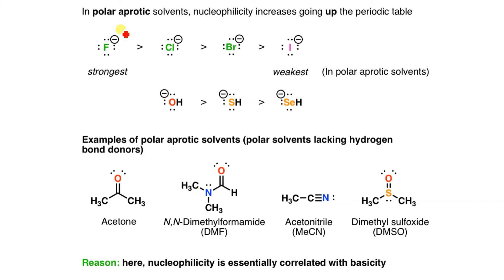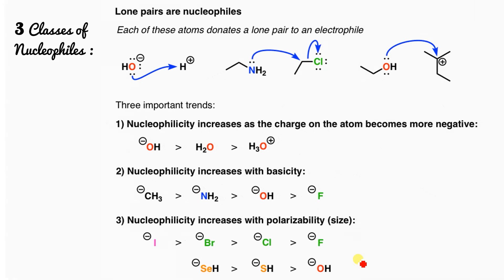In polar aprotic solvents, nucleophilicity increases as electronegativity decreases. Like OH- vs SH- vs Se- in the group: sulfur is less electronegative so it will have more nucleophilicity. In polar aprotic solvents, nucleophilicity is essentially correlated with basicity.